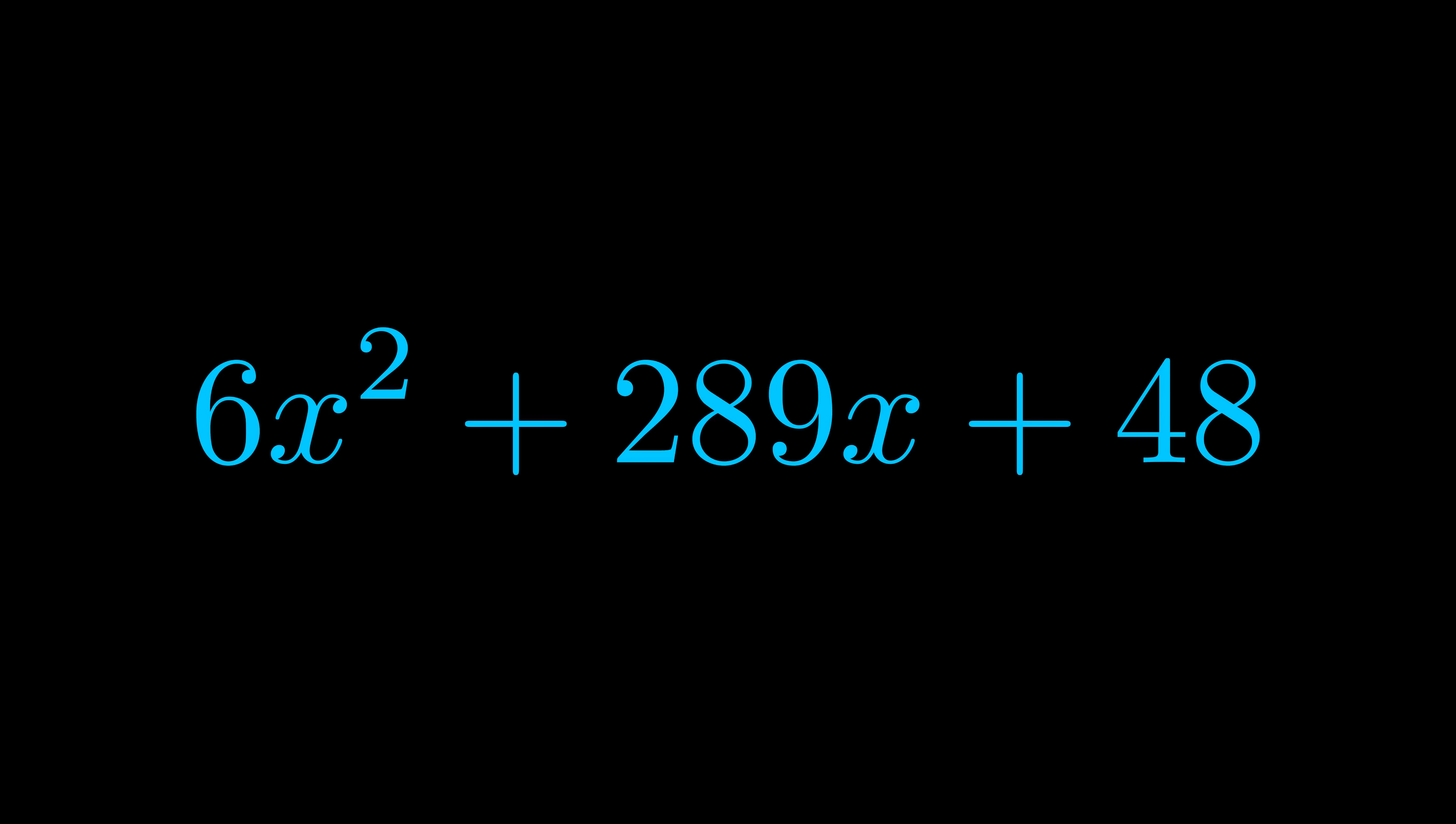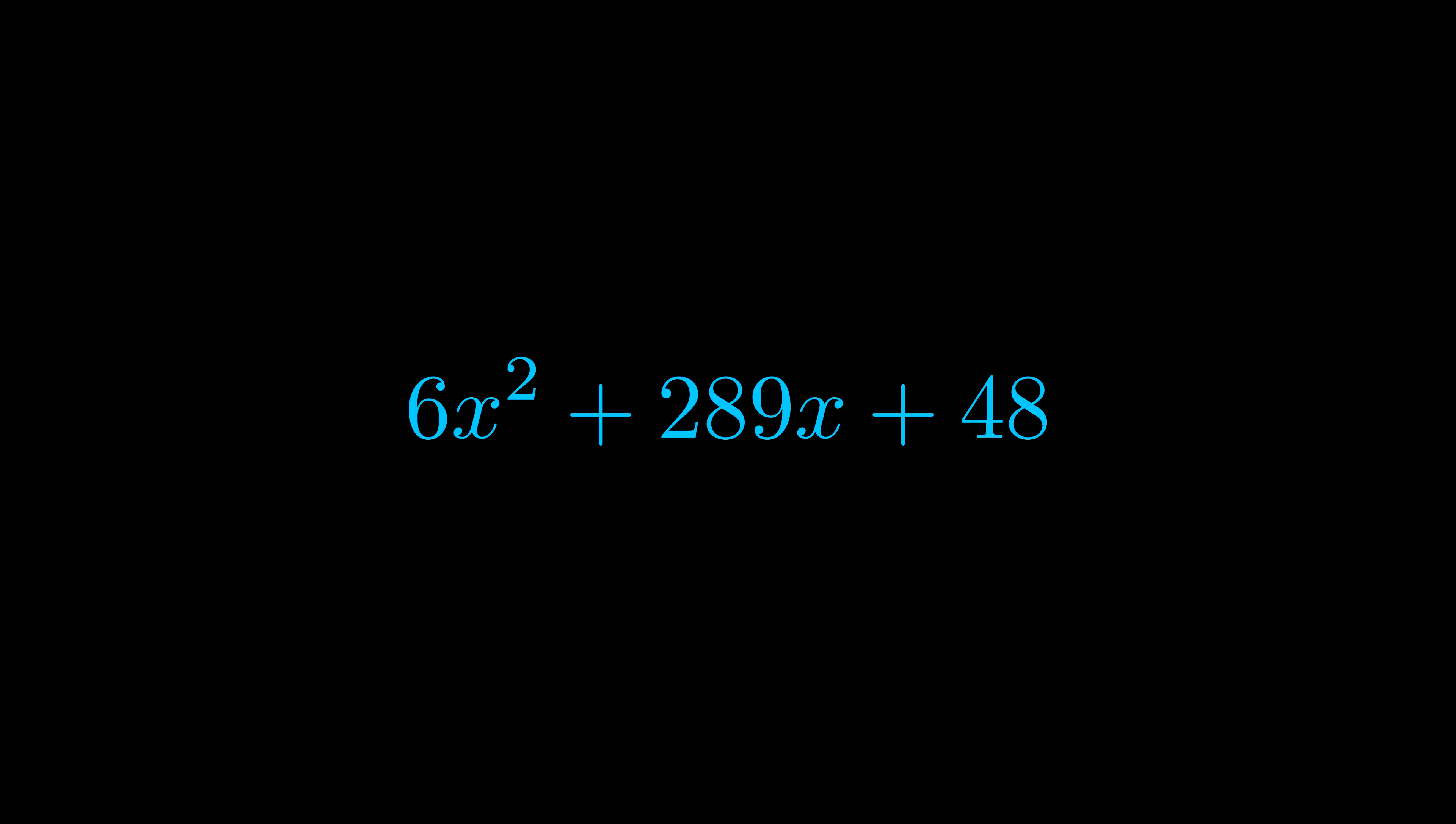Step one when factoring an equation of this form is to multiply the a value by the c value. Here we can see that our a value is the coefficient on the x squared term and our c value is the constant term.